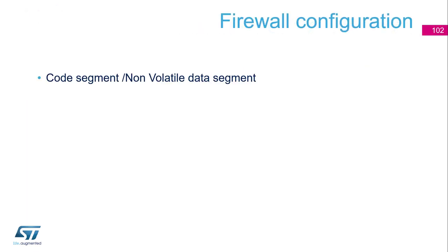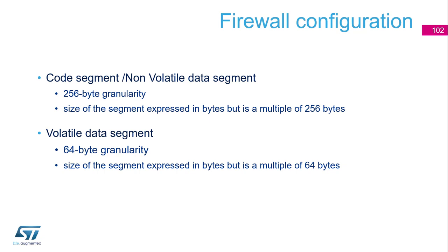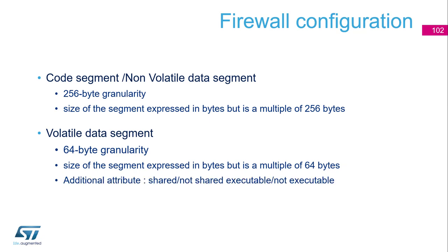Regarding configuration: the code segment and non-volatile data segment, which are located in flash, have a 256-byte granularity. For the volatile data segment, it's 64-byte granularity. An additional attribute for this segment can be shared or not shared, executable or not executable.